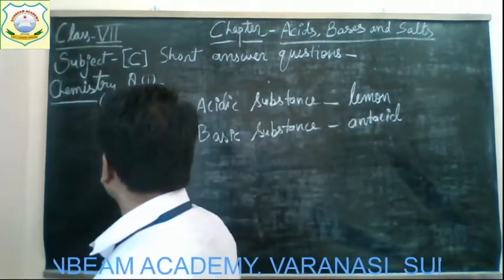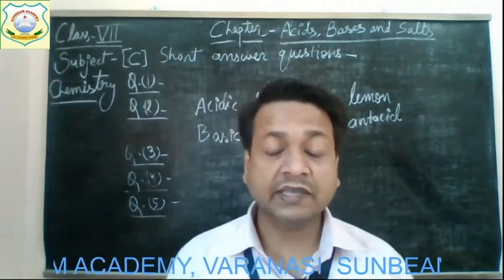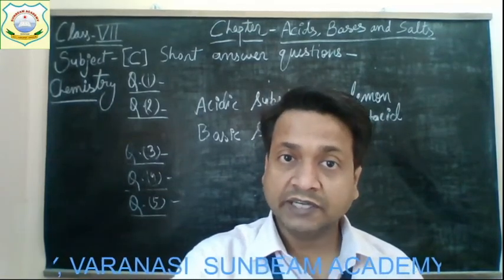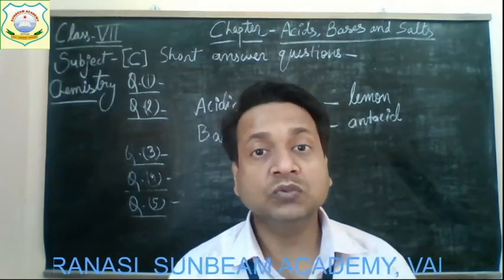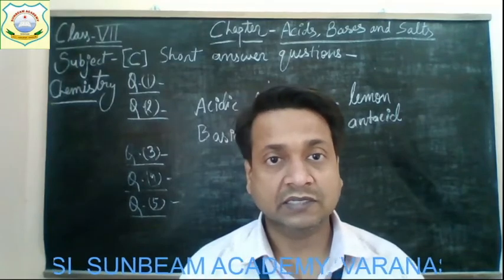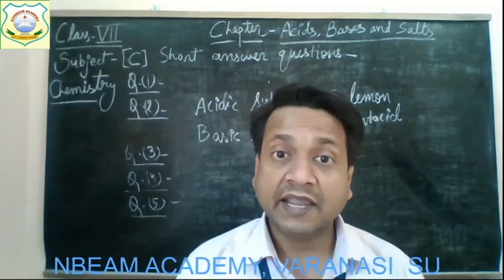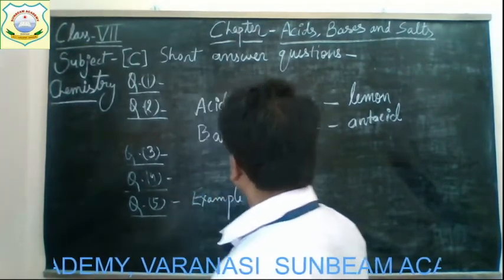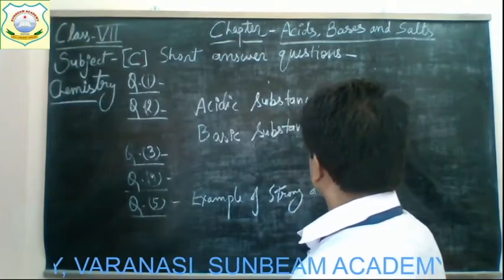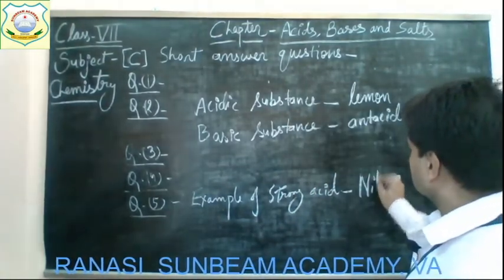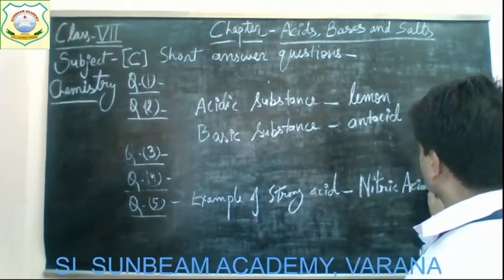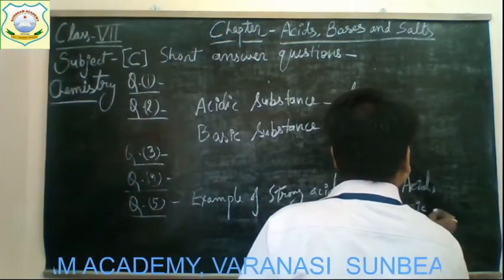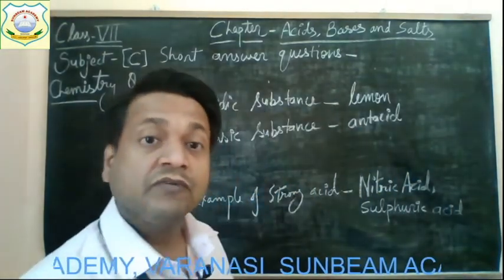Question number five: Give two examples each of strong acids and weak acids. The strong acids are nitric acid and sulfuric acid. These are examples of strong acids.